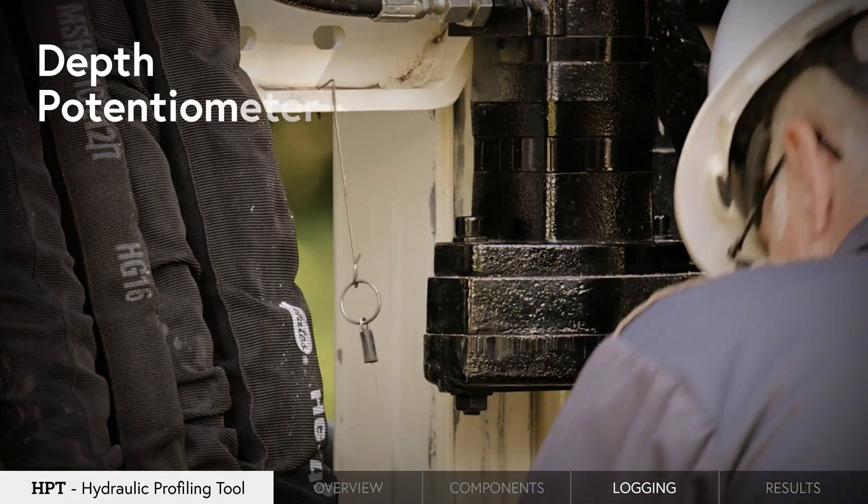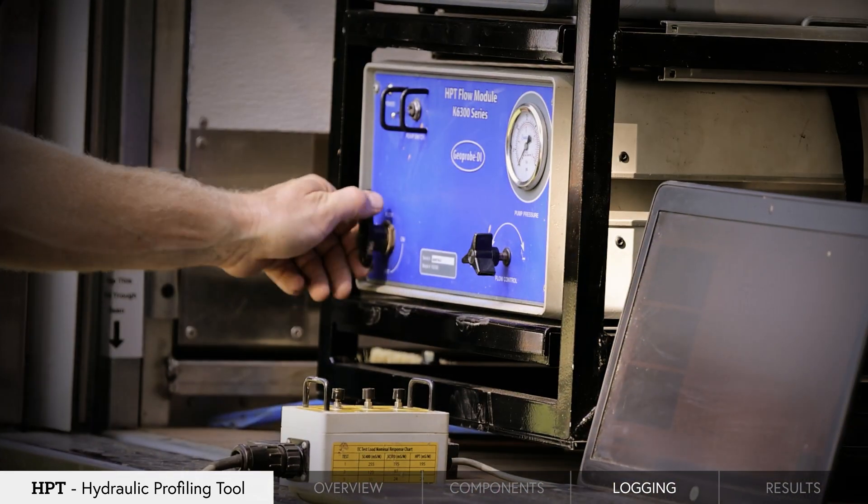Depth is recorded by connecting a depth potentiometer to the unit. The flow of water is started.